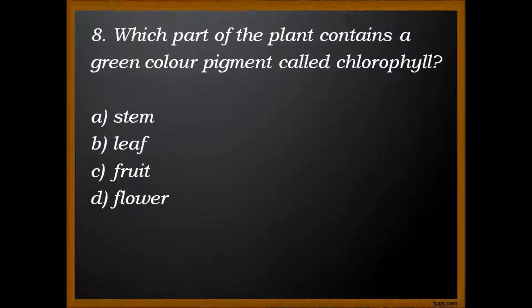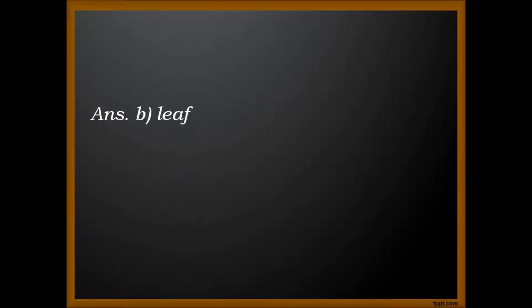Here is your next question. Which part of the plant contains a green color pigment called chlorophyll? A. Stem. B. Leaf. C. Fruit. And D. Flower. The answer is B. Leaf.